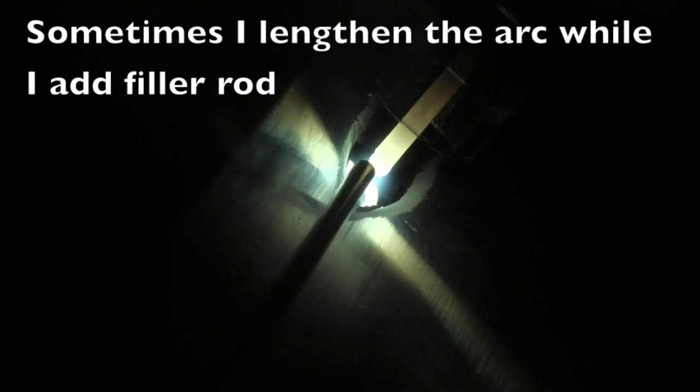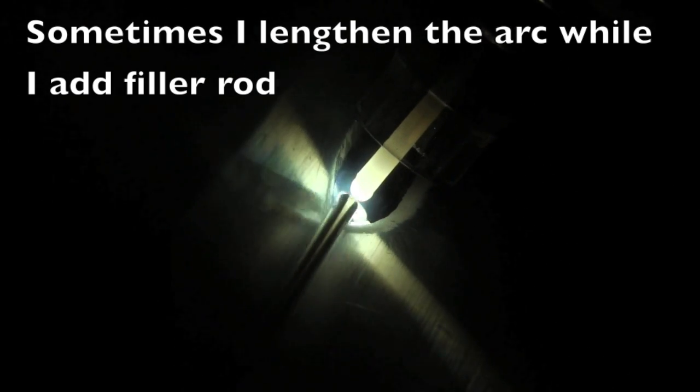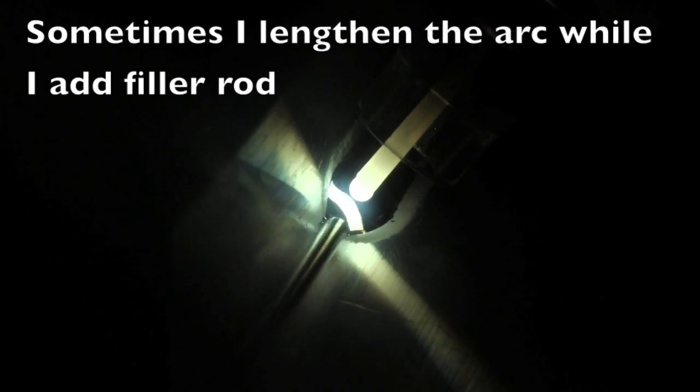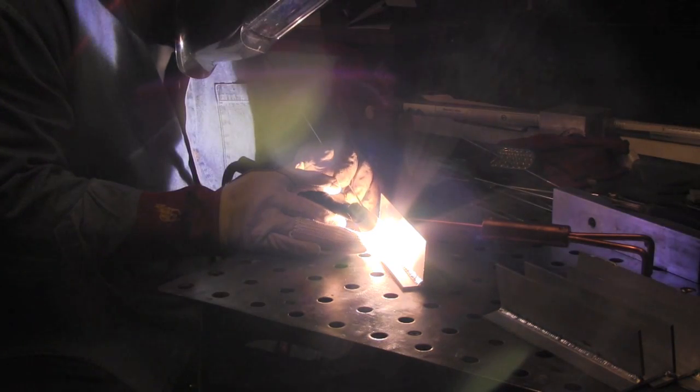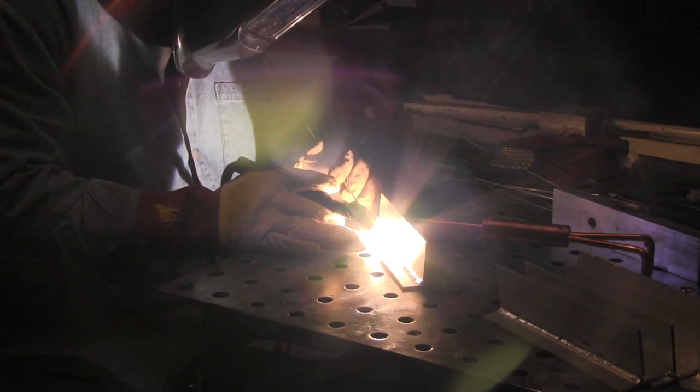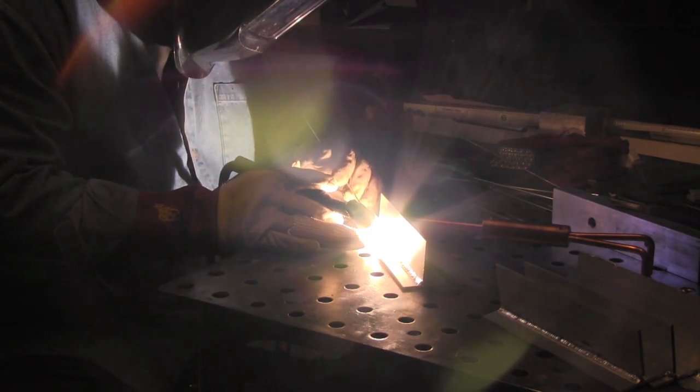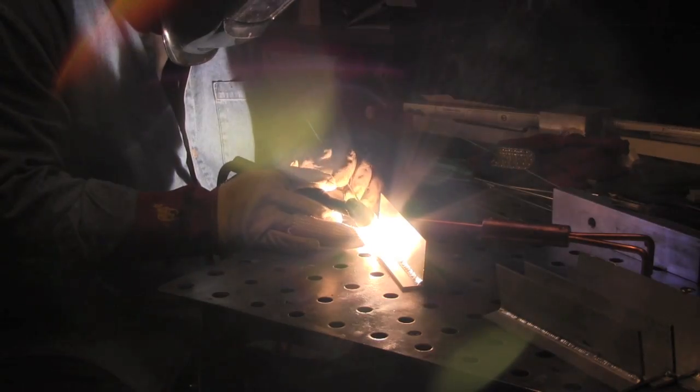Sometimes what I do, in fact a lot of times when I'm doing a T-joint like this, I'll run a real tight arc when I'm flowing metal ahead so that I flow it down into the corner, and then I will pull the electrode back a little bit while I add filler rod. There's lots of ways to do it but it's just something I've kind of gravitated towards.